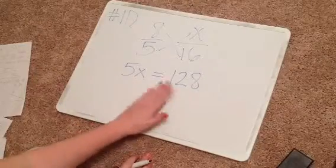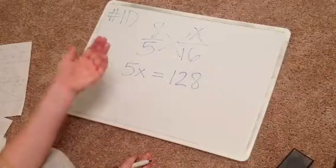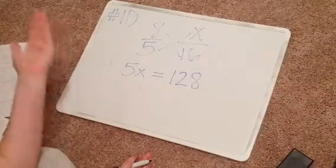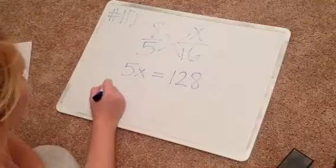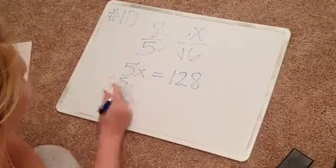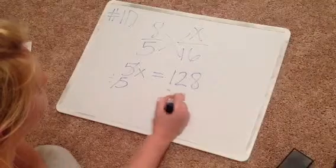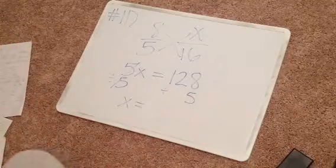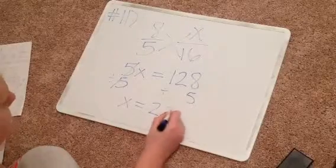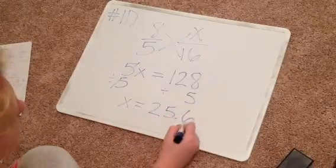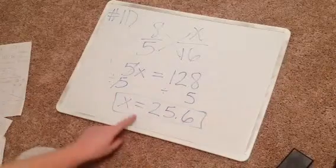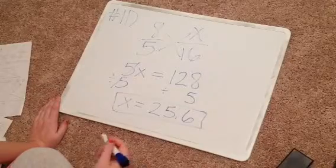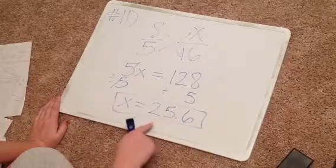So what we're going to do is cross multiply here. If I take 5 times x, I'm going to get 5x. I'm going to set that equal to 8 times 16, which is going to give me 128. Now, this should look like a little bit earlier in the year. This is just going to be a one-step equation. I know that 5x means multiplication, so in order to get x by itself, I need to do the opposite, which would be to divide by 5. But whatever I do here, I have to do over here. So I'm going to get x equaling 25.6.